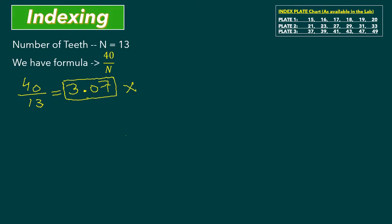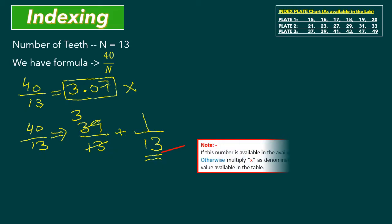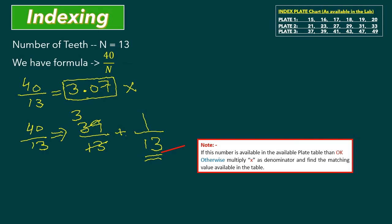We proceed similarly to the second method: 40 over 13 equals 39 over 13 plus 1 over 13, which simplifies to 3 plus 1 over 13. First, check whether 13 is available in the index plate chart. If the number is not available in the plate table, we need to multiply numerator and denominator by x to find a matching value available in the table. This is the third step.